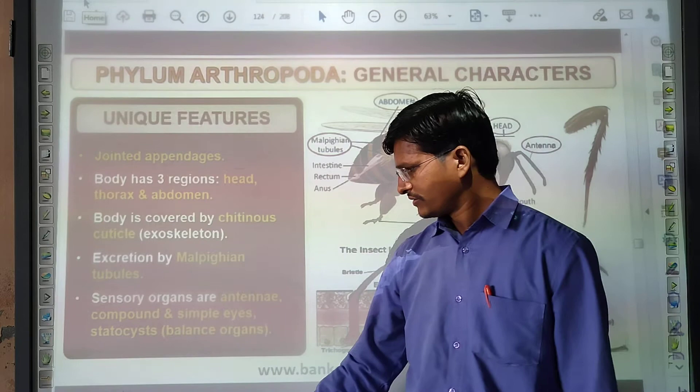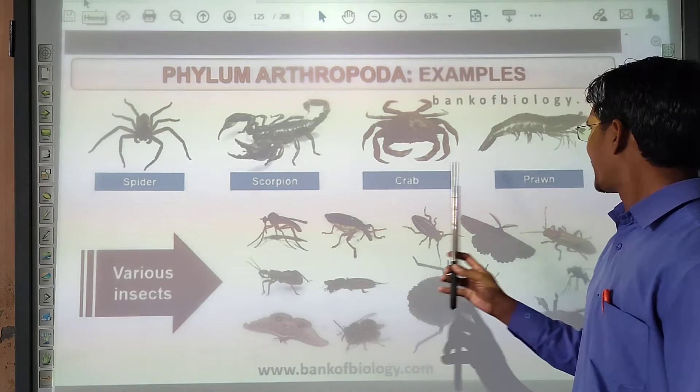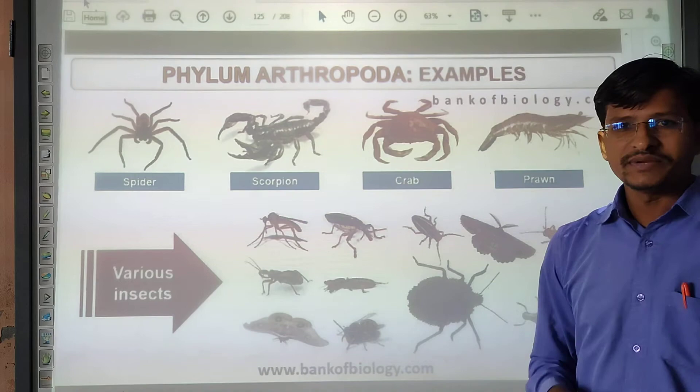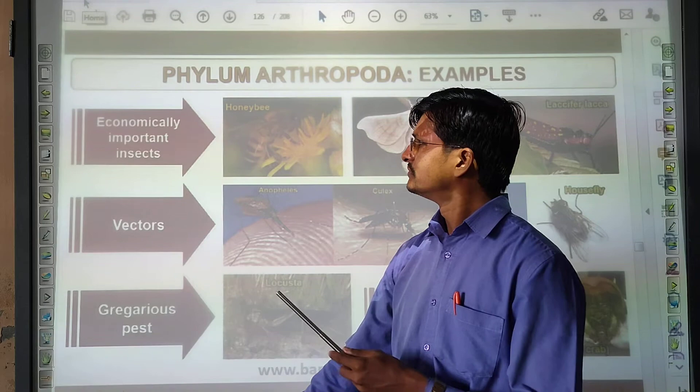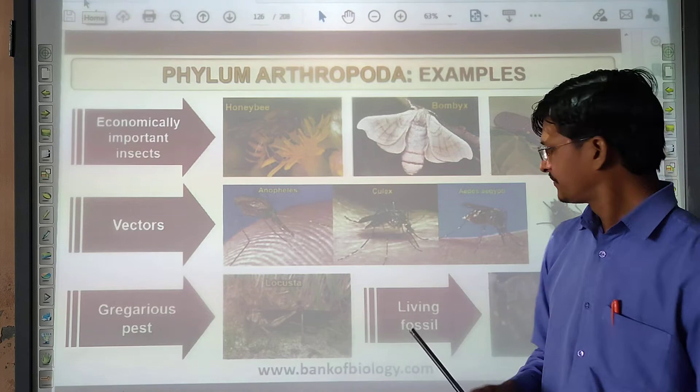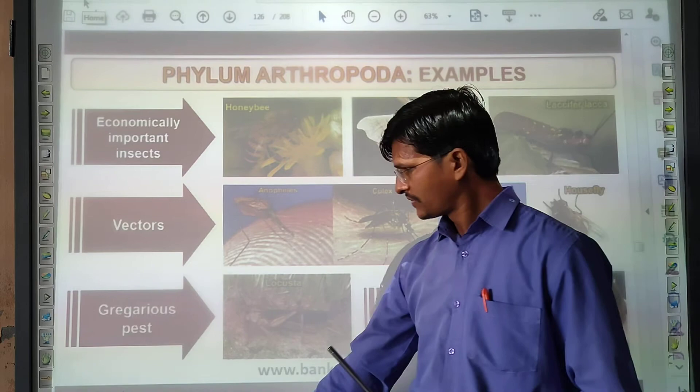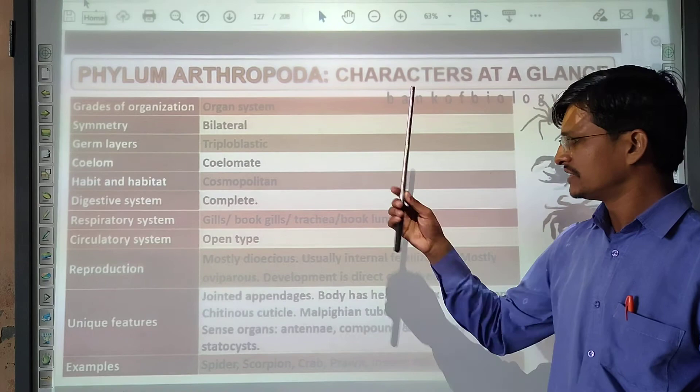Different examples of Arthropoda are: spider, scorpion, crab, prawn, and various insects such as butterfly. These can all be considered arthropods. At a glance you can see their jointed features. Next phylum is Mollusca.